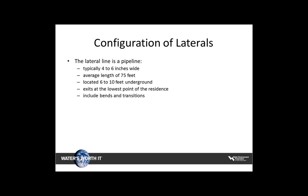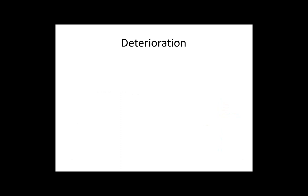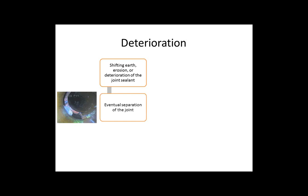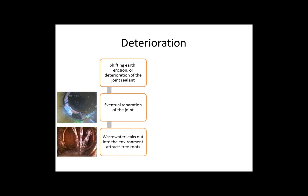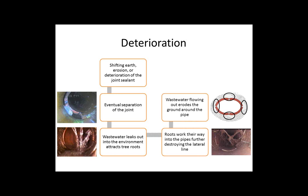Laterals are typically four to six inches in diameter with an average length of around 75 feet. They are located six to ten feet underground and usually exit at the lowest point of the residence connecting to the main line. Laterals can include bends and transitions and are constructed of several different materials such as VCP, ductile iron, cast iron, Orangeburg, or PVC. Shifting earth or erosion causes deterioration of joint sealant, leading to joint separation, exfiltration, root intrusion, and eventually infiltration — causing the pipe to sag, crack, and fail progressively downstream.